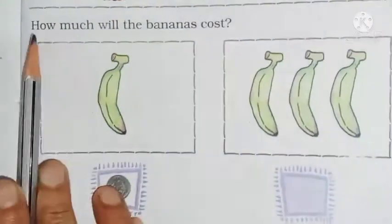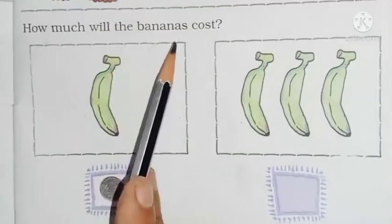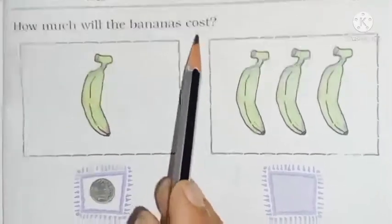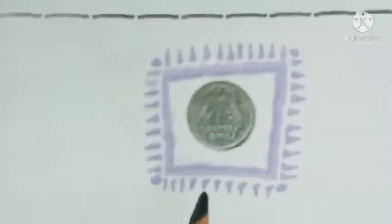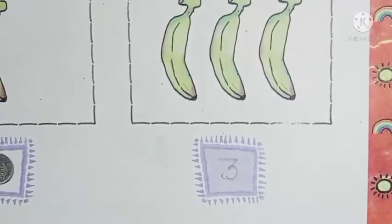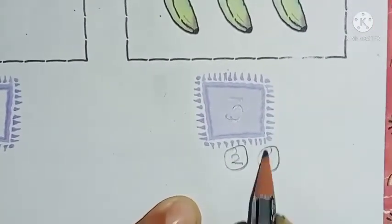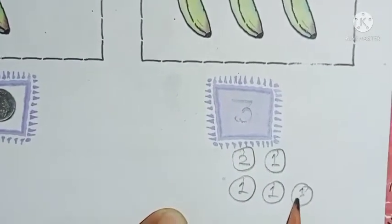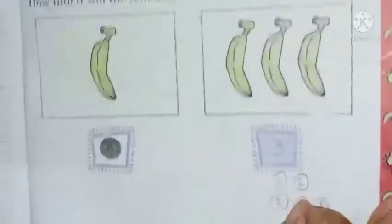Now next — how much? How much means how much will the cost be? Cost means price. So for 1 banana, look children — which coin is it? We covered coins in the last chapter. So 1 coin for 1 banana, so 3 bananas will cost 3 coins. So here the answer is 3.